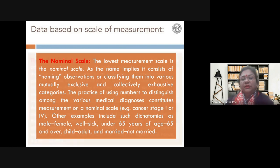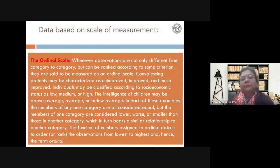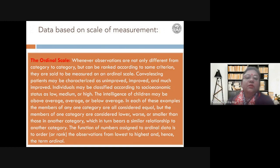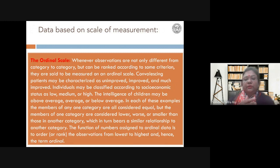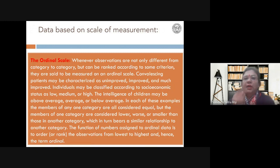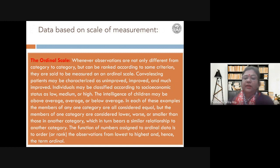When you put a number or rank the data, it becomes an ordinal scale. The observations not only vary from category to category, but you can rank them. For example, in hospitals, a patient condition might be: not improved, little improvement, completely improved — these are different classes that can be ranked. Similarly, intelligence can be rated as very intelligent, average intelligence, below average, and you rank them 1, 2, 3, 4.